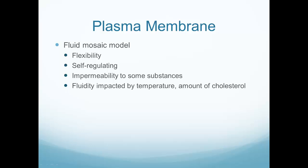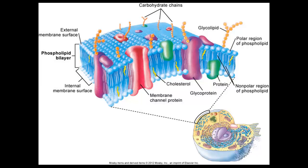There's some flexibility to it — it's self-regulating and impermeable to substances that could cause damage. However, how the fluid mosaic model works can change depending on the amount of cholesterol in the body and the temperature. The plasma membrane includes a phospholipid bilayer, membrane channel proteins, cholesterol, and other components that all help regulate what goes in and out of the cell.